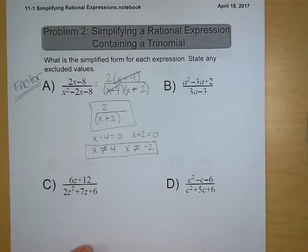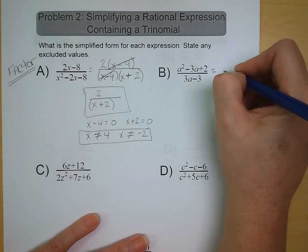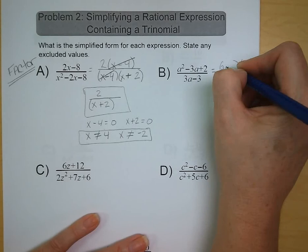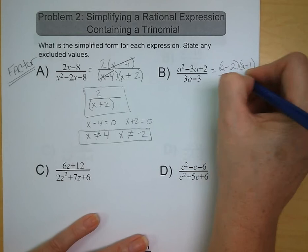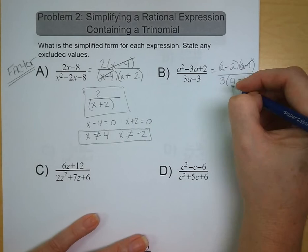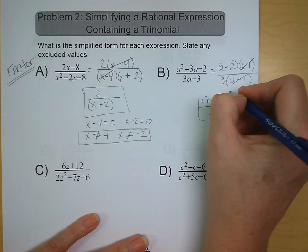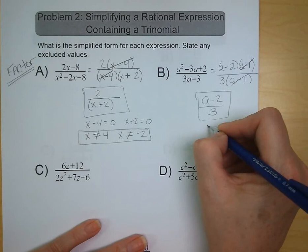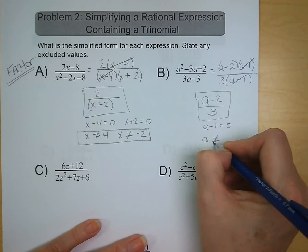Letter B: the numerator we can factor — we're looking for things that multiply to positive 2 and add to negative 3, giving us a minus 2 times the quantity a minus 1. That's all divided by 3 times the quantity a minus 1. We've got a minus 2 over 3 as our reduced form. We're looking for what makes the denominator 0: a minus 1 equals 0, so a cannot be equal to positive 1.